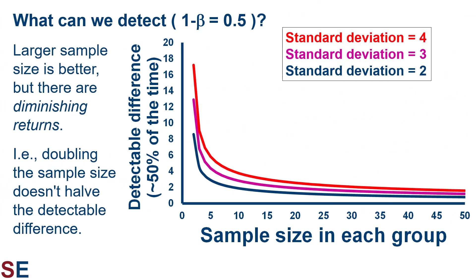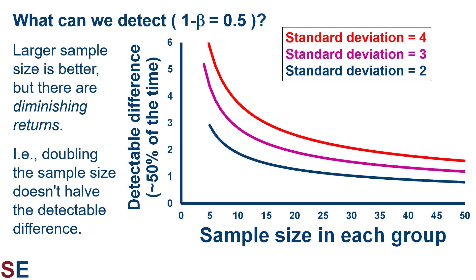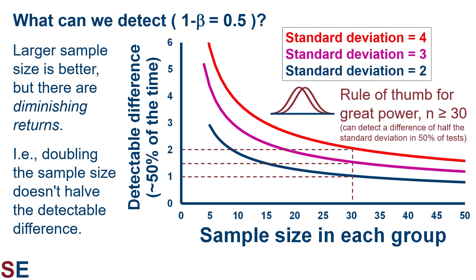A larger sample size is always better, but there are diminishing returns — doubling the sample size doesn't halve the detectable difference. The figure shown here plots the detectable difference on the y-axis for two-sample homoscedastic t-tests, with the sample size of each of the two samples on the x-axis. The three colored lines show the detectable difference for standard deviation values of two, three, and four. For extremely small sample sizes, the minimum detectable differences become huge. Focusing on more realistic situations where sample sizes are at least five each, the curve shows an asymptote at just less than about half the standard deviation of each population. Looking at the required sample sizes to detect a difference in means of half the standard deviation, we would need a sample size of about 30. This gives rise to a common rule of thumb: with t-tests we have excellent statistical power when we have 30 values in each sample, allowing us to detect a difference in population means of only half a standard deviation in about half of our tests.